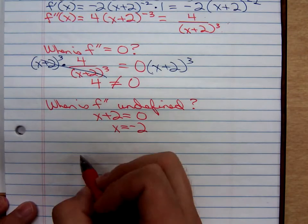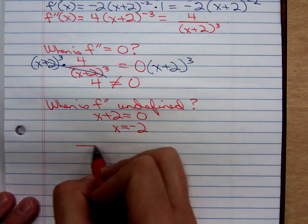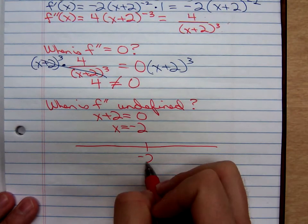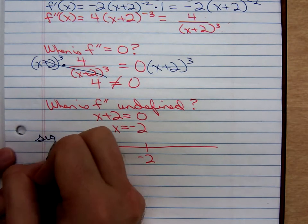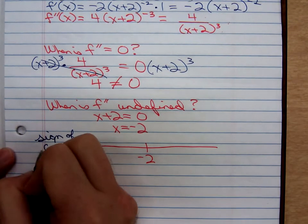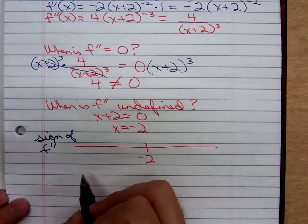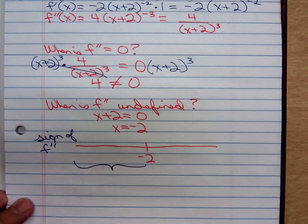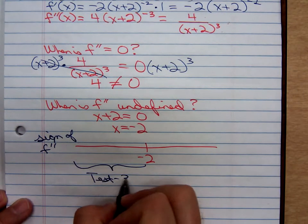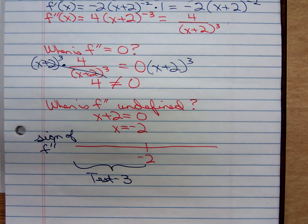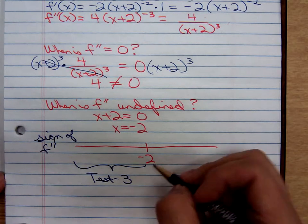So we draw our number line. There is negative 2. We are going to look at the sign of f double prime. To the left of negative 2, we will test negative 3. To the right of negative 2, we will test 0.